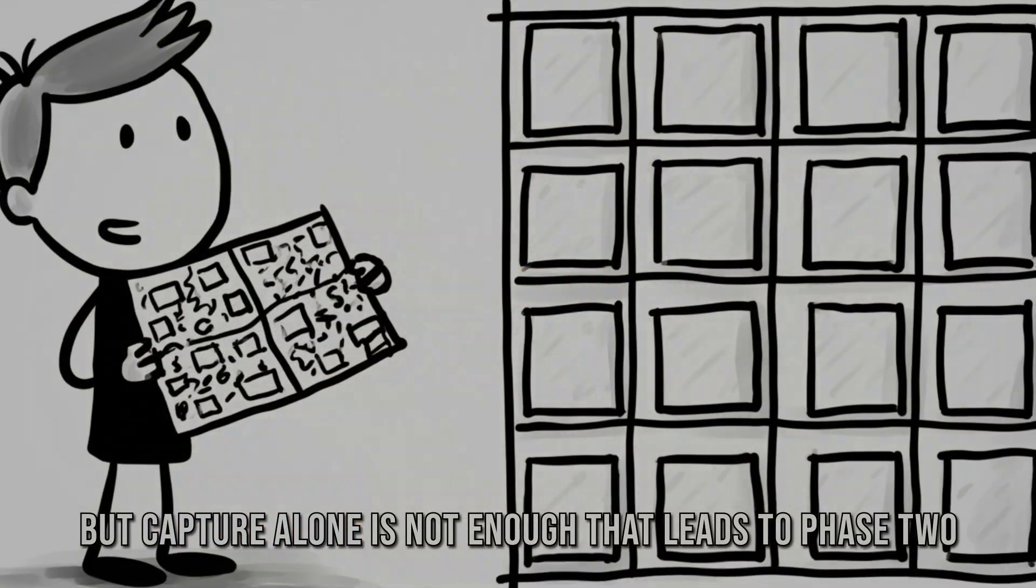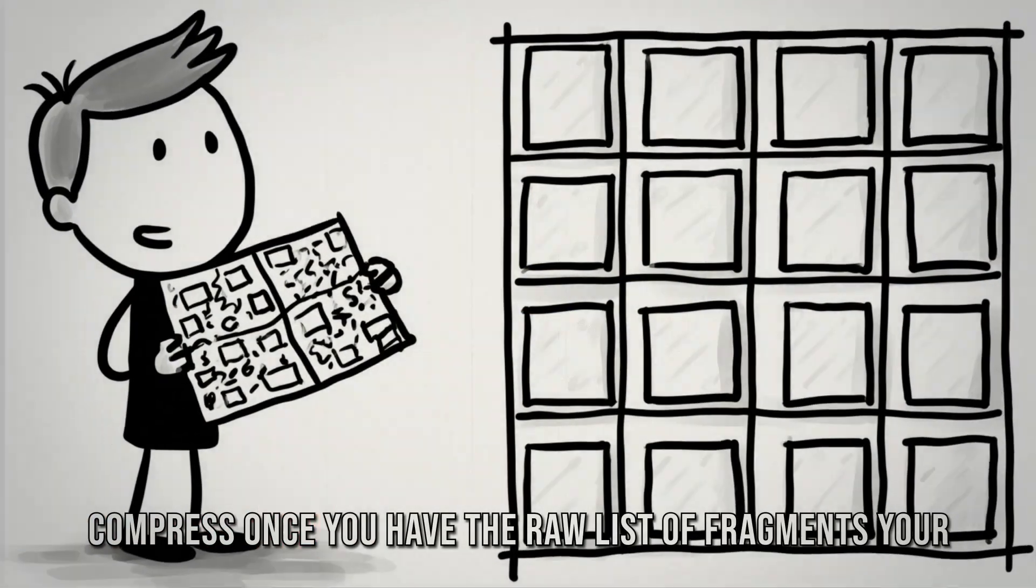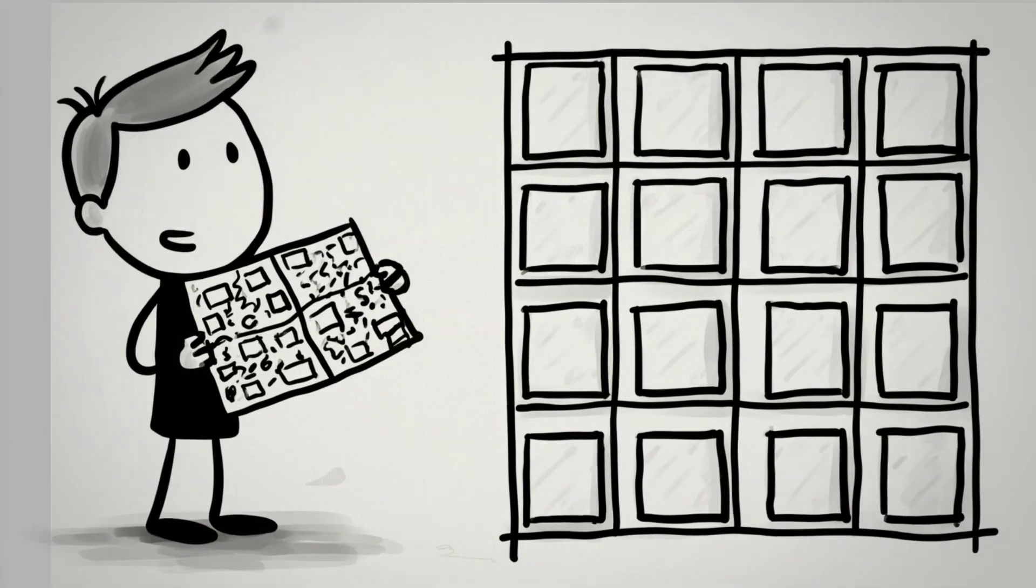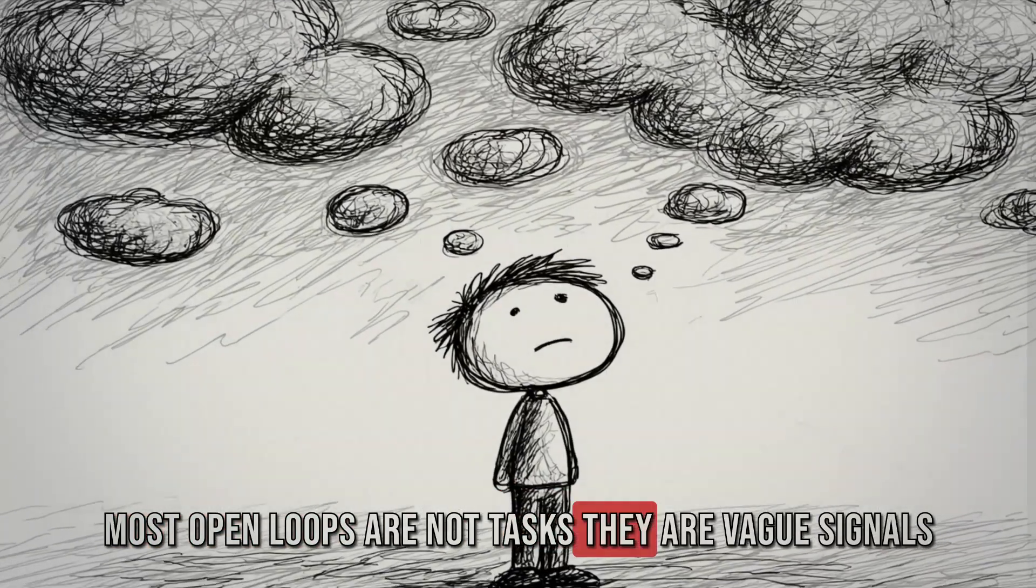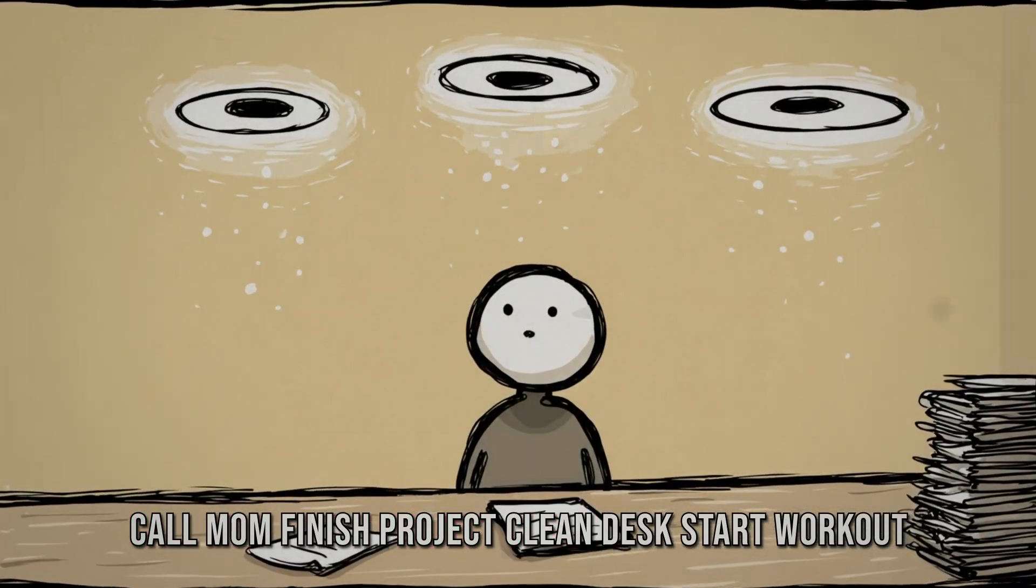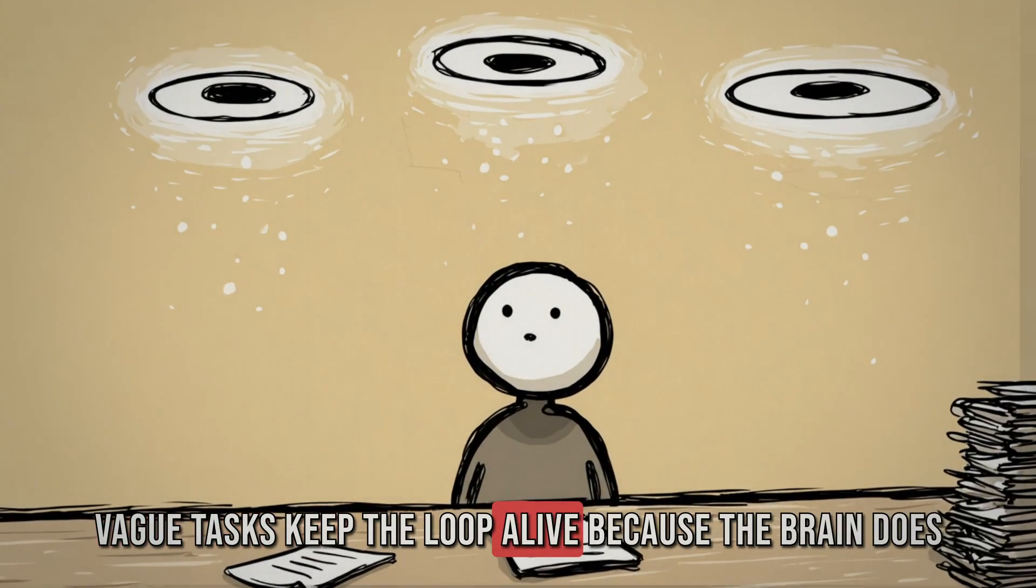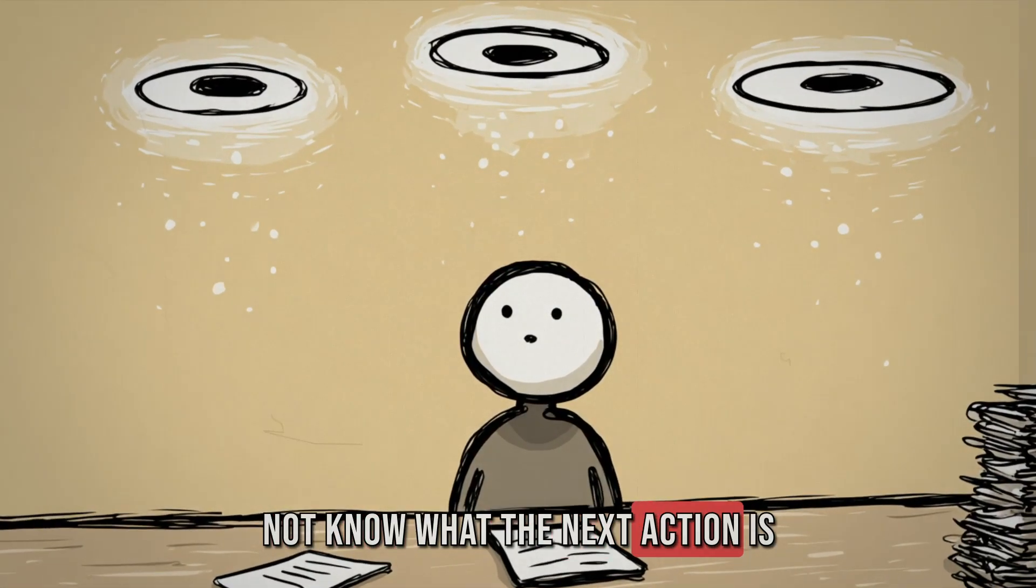But capture alone is not enough. That leads to phase two, compress. Once you have the raw list of fragments, your job is to shrink them. Most open loops are not tasks, they are vague signals. Call mom. Finish project. Clean desk. Start workout. Vague tasks keep the loop alive because the brain does not know what the next action is.